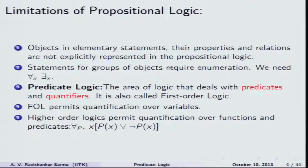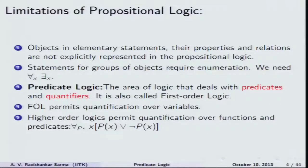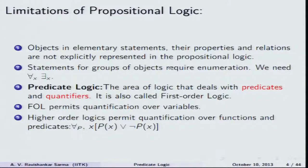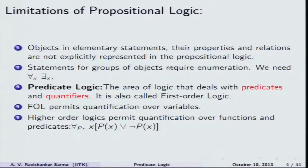In a nutshell, predicate logic is an extension of propositional logic with two quantifiers: for all X and there exists some X. Predicate logic is an area of logic that deals with predicates, which talk about the relationship between objects and whether an object possesses a particular property. For example, 'all men are mortal' — mortality is a property attributed to human beings, so mortality is the predicate. The other term for predicate logic is first-order logic. First-order logic means predicate logic plus propositional logic. One advantage of first-order logic is that it permits quantification over variables.